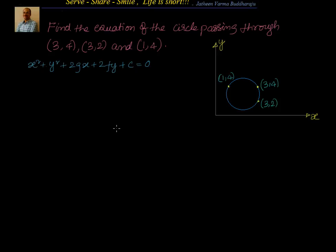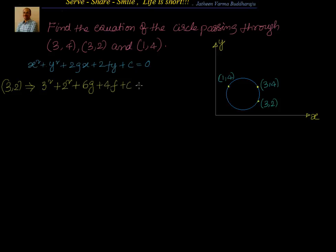We will substitute the points one after the other to get the equations. We will get 3 equations because there are 3 points, and if you observe, there are 3 variables: g, f and c. With 3 equations and 3 variables, if you solve the linear equations you will get the solution. First we will substitute the point (3,2). Substituting x=3, y=2 gives 9 + 4 + 6g + 4f + c = 0, which simplifies to 6g + 4f + c = −13. That is Equation 1.